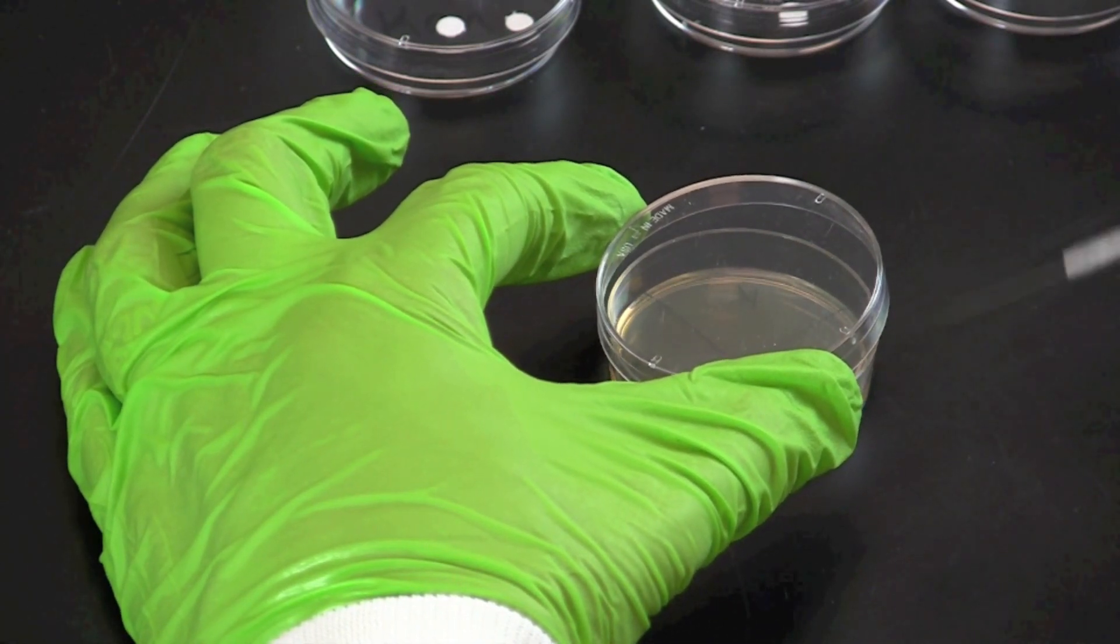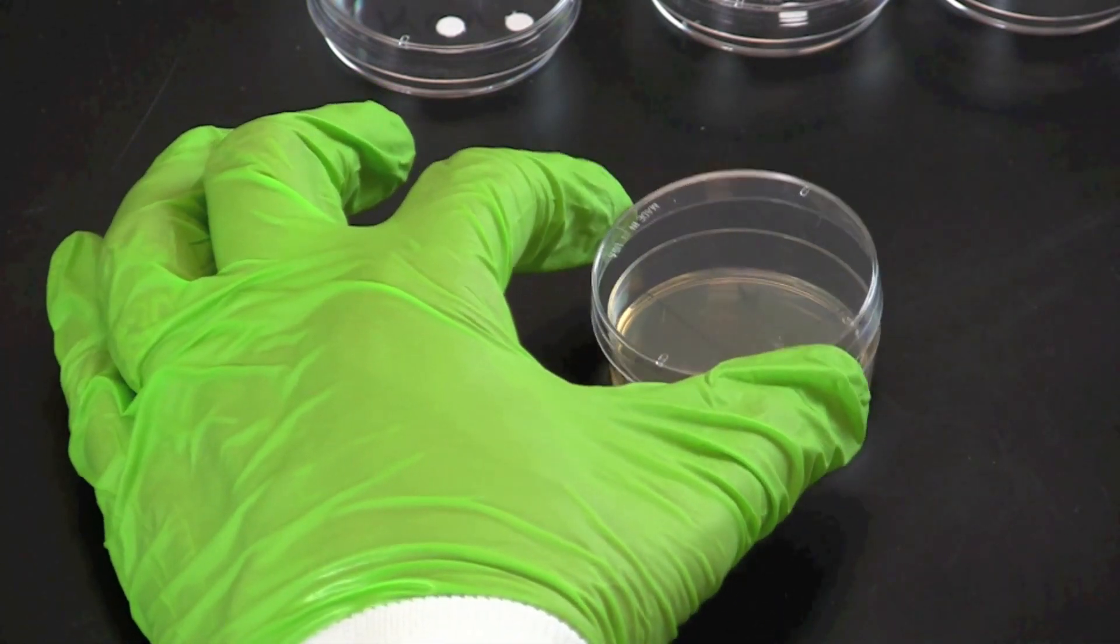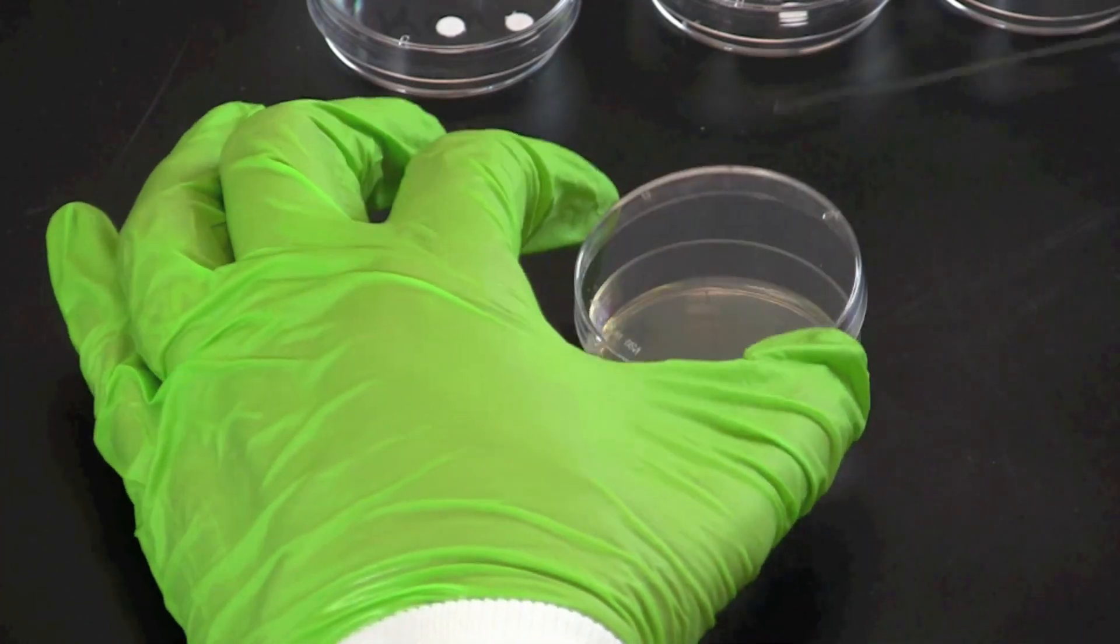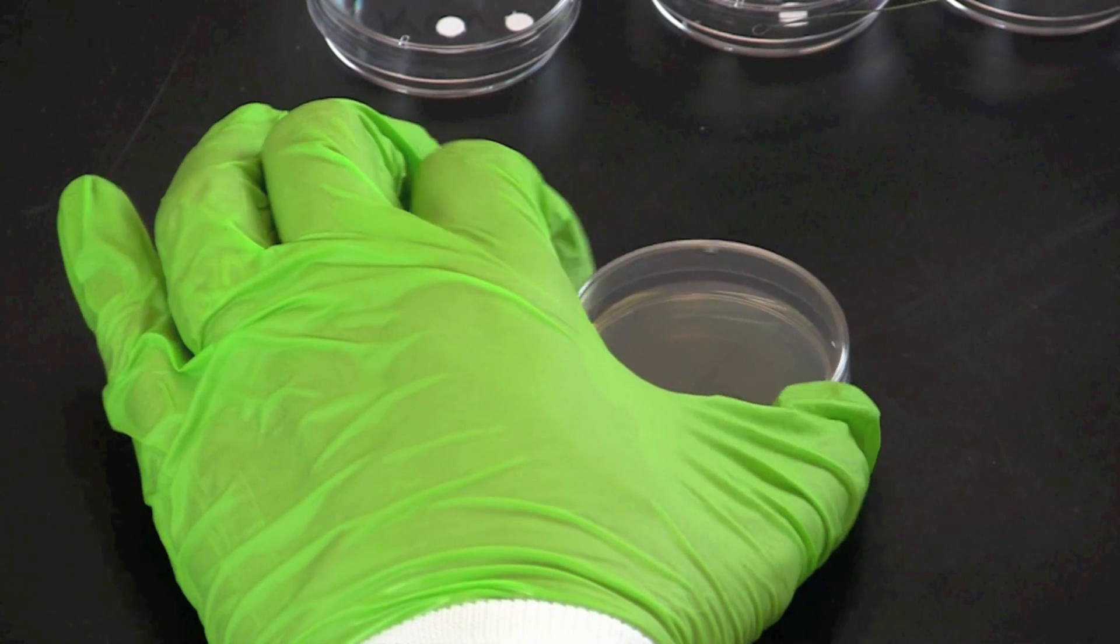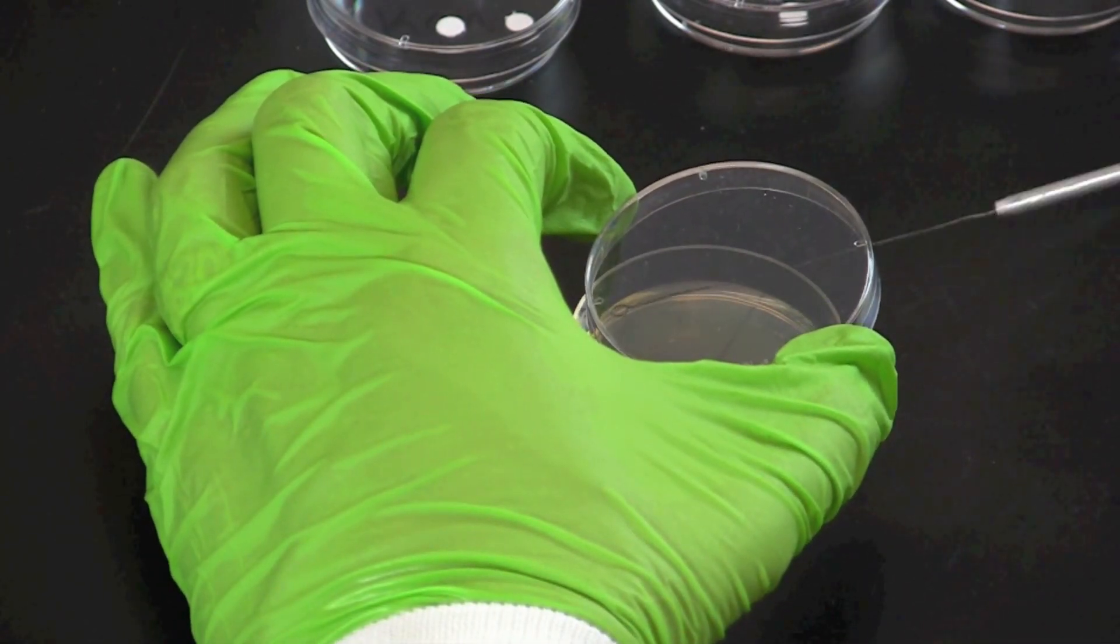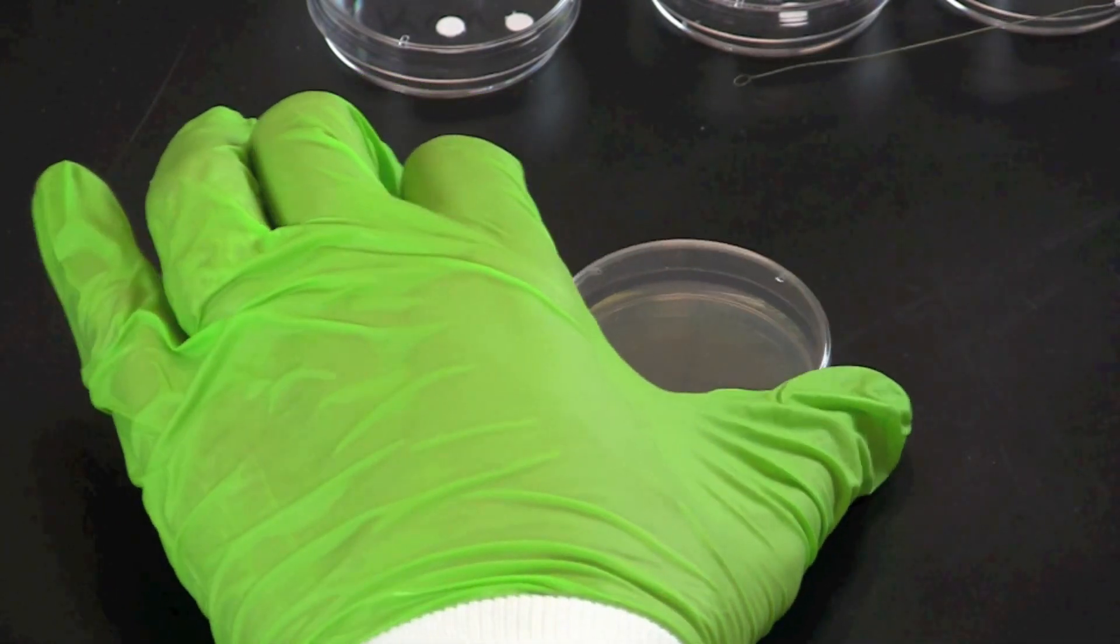Transfer the bacteria to your prepared plate. Spread the bacteria over the entire surface of the plate in all directions. Rotating the plate a quarter turn between spreads will ensure that the bacteria is spread evenly across the plate.